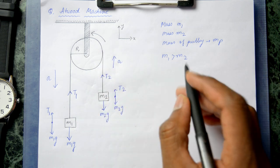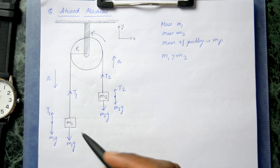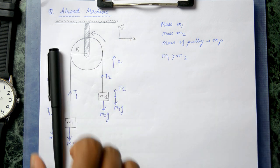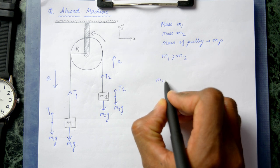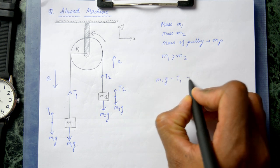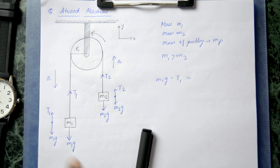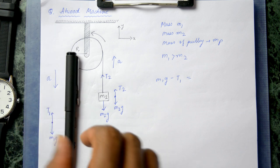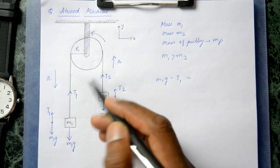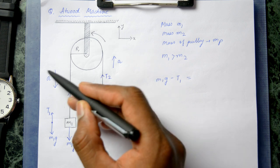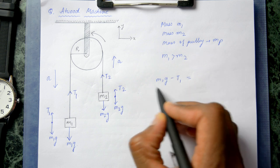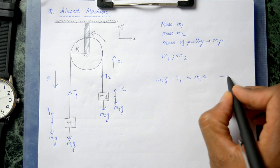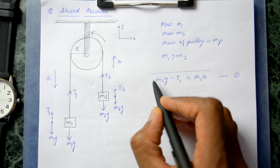The first equation of motion: since m1 is moving downward, m1g must be greater than t1. The net force is m1g minus t1, and by Newton's second law this equals m1 times acceleration a. So the first equation of motion is: m1g − t1 = m1a.